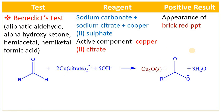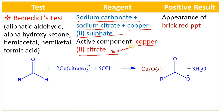Benedict's test is also similar to Fehling's test. The advantage of Benedict's test is that the active component is copper citrate, which is prepared by mixing sodium carbonate, sodium citrate, and copper(II) sulfate. Copper citrate is stable compared to copper tartrate, so there is no need to prepare a fresh mixture; you can prepare it and use it after some days. Benedict's test has largely replaced Fehling's test.